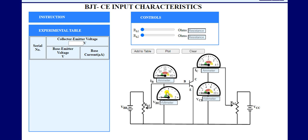To measure current, the ammeter is connected in series, and for voltage measurement, the voltmeter is connected in parallel. For input current IB, the ammeter is in series, and for input voltage VBE, a voltmeter is connected in parallel. Similarly, for output current IC, an ammeter is connected in series, and for output voltage VCE, a voltmeter is connected across the collector terminal to ground in parallel.